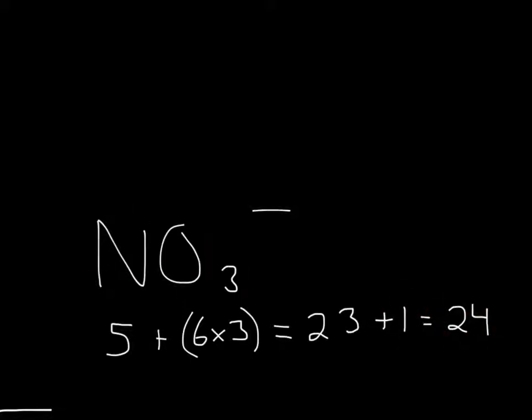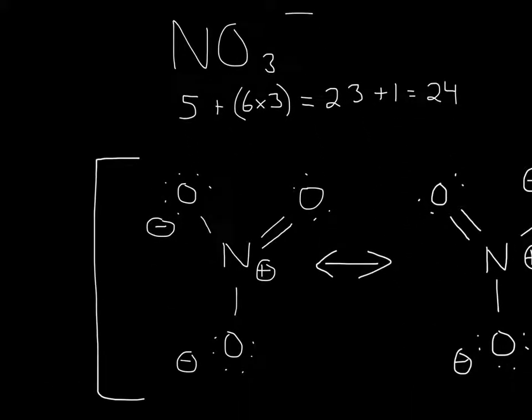Now, you put the least electronegative atom in the middle and surround it with the other atoms, then put the charges on each one. Usually you want a minimum amount of charges, meaning you don't want more than two, but this molecule's an exception.